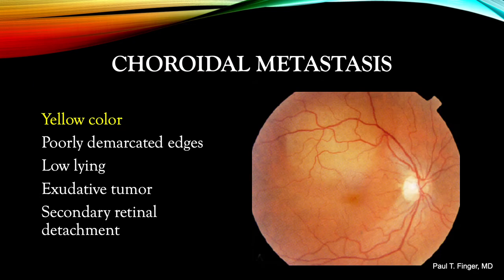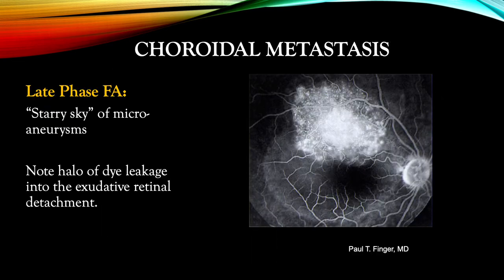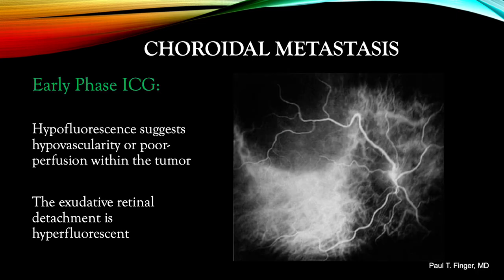Here is another case for review. The tumor is yellow in color. Its edges are poorly defined. The tumor is relatively low-lying with a disproportionately large gravity-dependent exudative retinal detachment. In the late phase fluorescein angiogram, this metastatic tumor demonstrates what I call a starry sky of microaneurysms. Also note mild hyperfluorescence from its gravity-dependent exudative retinal detachment. That same tumor examined with ICG angiography reveals poor dye perfusion causing relative hypofluorescence in the tumor. The secondary exudative retinal detachment is also shown and is affecting the choroid causing intense hyperfluorescence.